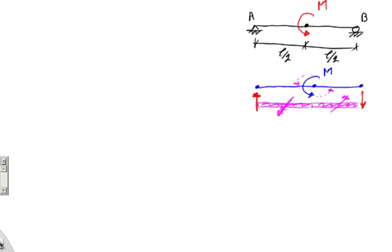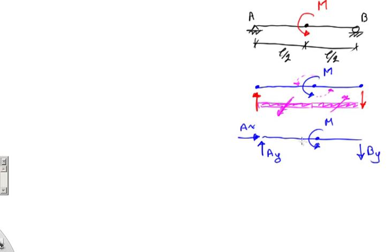Let's draw it again cleanly. At the left support I have AY, at the right support I have BY, and at the mid span I have moment M. Note that there should be a reaction AX at the hinge, but from the summation of forces in the X direction, AX equals zero, so I'm going to eliminate it from the start.